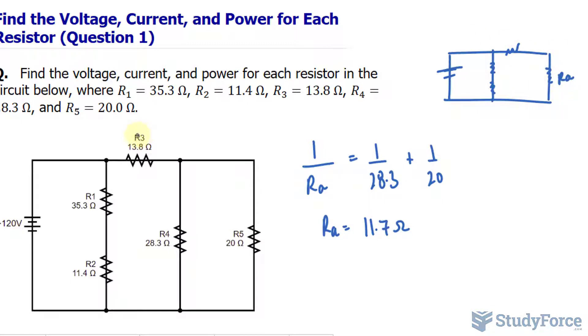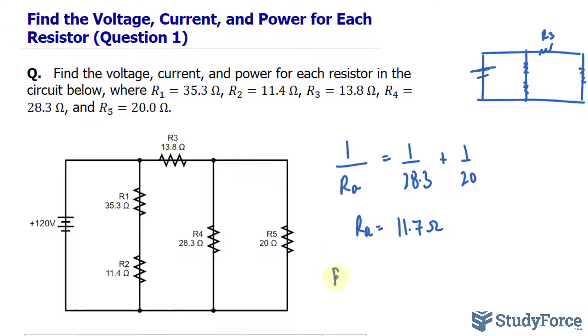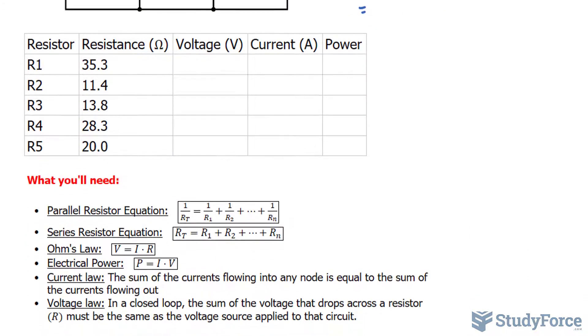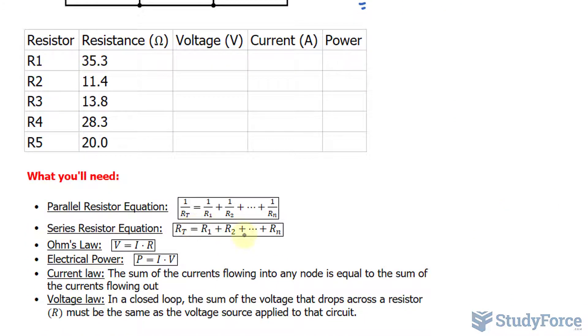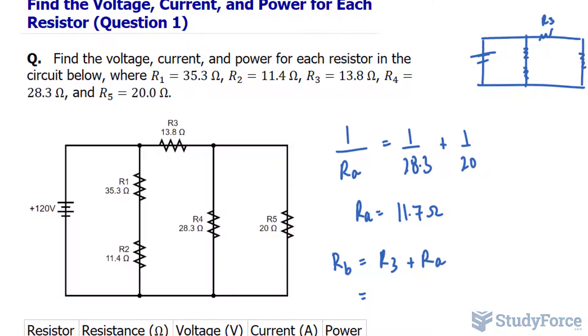R sub A and R sub 3 are in series. So I will combine R sub 3 and R sub A as one resistor, and when they're in series, it's actually quite easy. You just add them up. The combined one will be called R sub B, and it consists of R sub 3 plus R sub A. And in case you're curious about the formula, when resistors are in series, you use that formula, which is what I'm doing. So I'll combine 13.8 plus what I just found as 11.7, and that should give you 25.5, and that's in ohms.